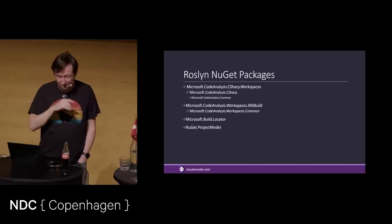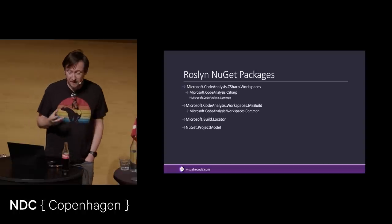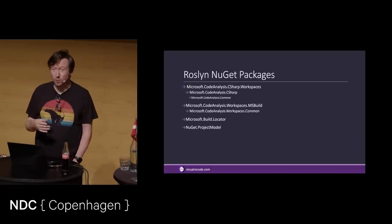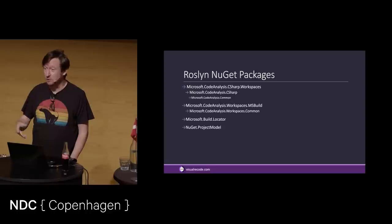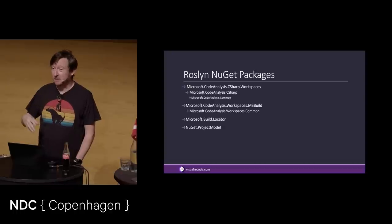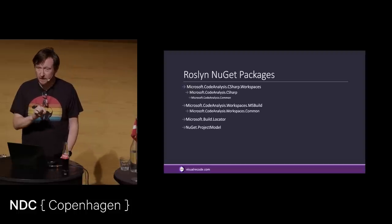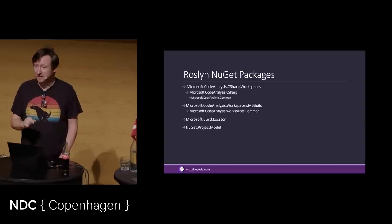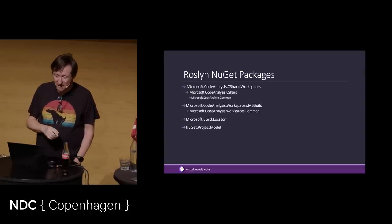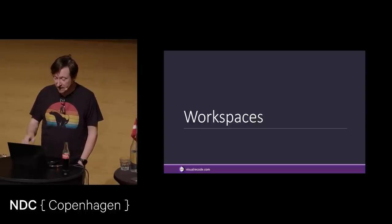So, how to Roslyn? A bunch of NuGet packages, all under Microsoft.CodeAnalysis. You've got Microsoft.CodeAnalysis.CSharp.Workspaces — a workspace lets you load a solution and then you can work with the code. We also have Microsoft.CodeAnalysis.Workspaces.MSBuild, which works at the project level and gives you solutions and everything else. There's a weird little package called Microsoft.Build.Locator — I really don't understand what it does, I just know it exposes one method and you need to call that method first. And then there's also NuGet.ProjectModel, which is useful for analyzing package references.